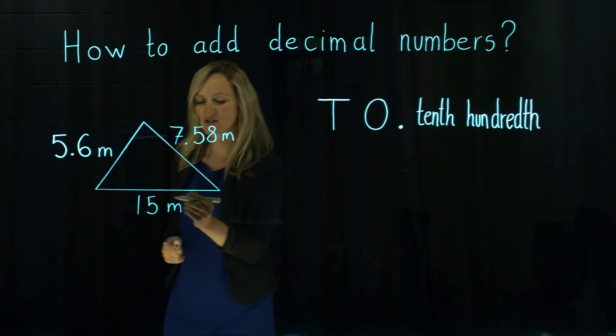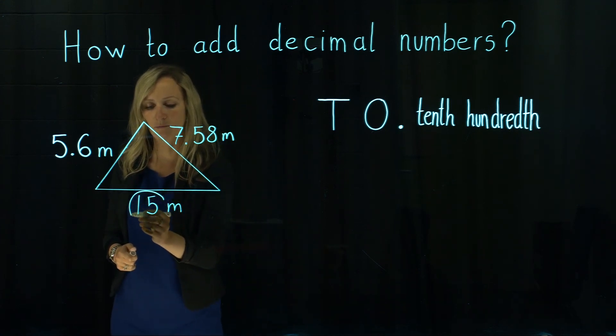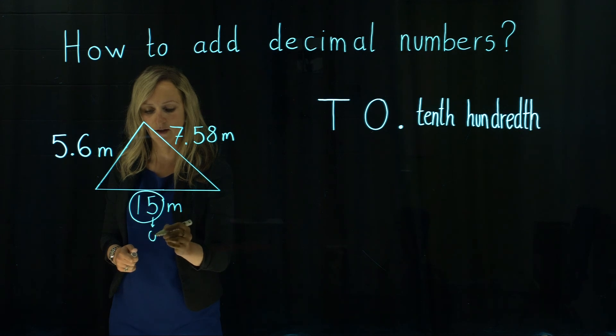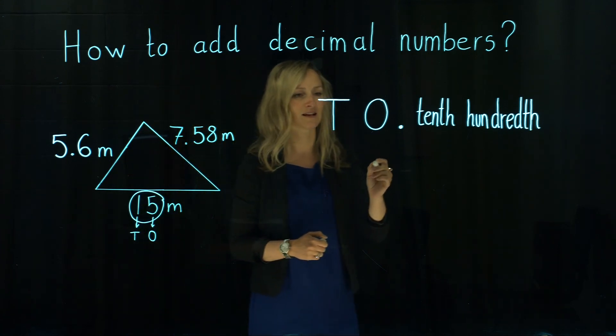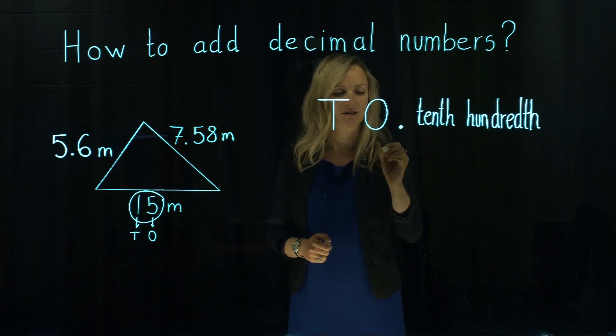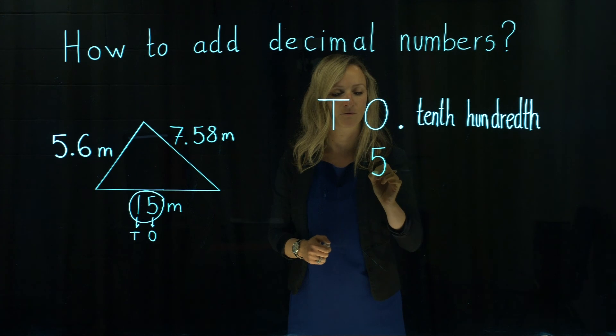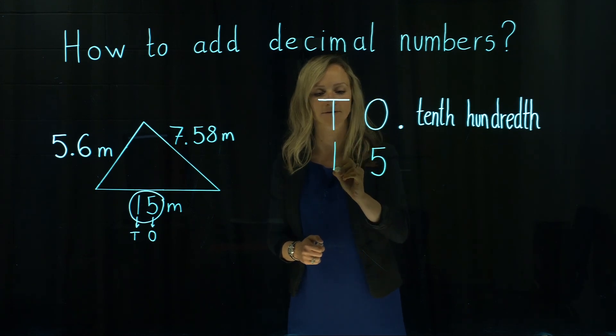15 meters, this is actually a whole number so we've got five ones and one ten. Let's place that in a place value table. So five ones and one ten.